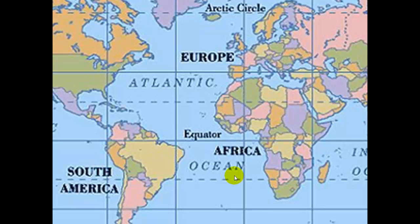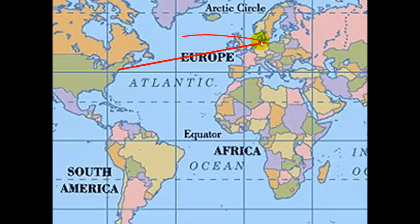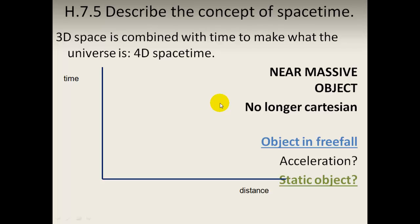A nice analogy: when you travel from Copenhagen to New York, you don't follow what looks like a straight line on a flat map. The Earth is not Euclidean — it's a curved surface, so geometry rules don't work the same way. The flight path curves up and around. From our point of view it looks odd, but if you look at a globe, that curving path is actually the straightest path between those two points. You need to look at a sphere to see this.